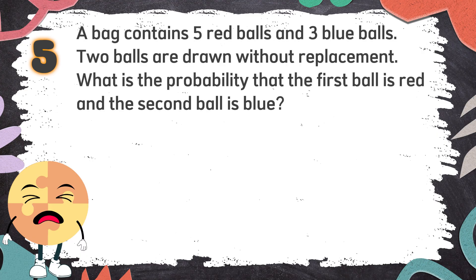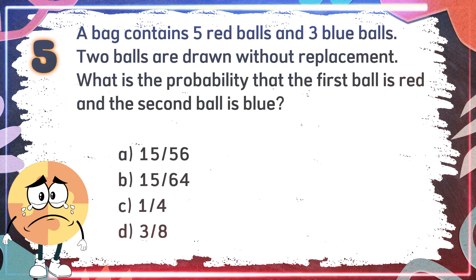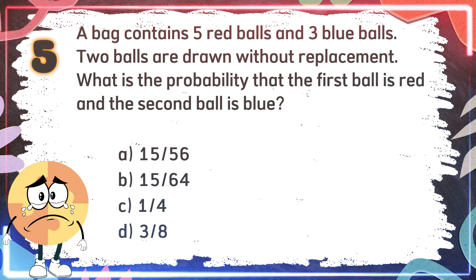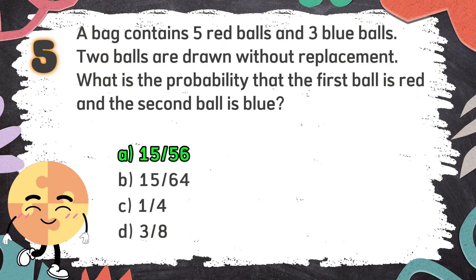Number 5: A bag contains 5 red balls and 3 blue balls. Two balls are drawn without replacement. What is the probability that the first ball is red and the second ball is blue? The choices are A. 15 out of 56, B. 15 out of 64, C. 1 out of 4, D. 3 out of 8. The correct answer is A. 15 out of 56.